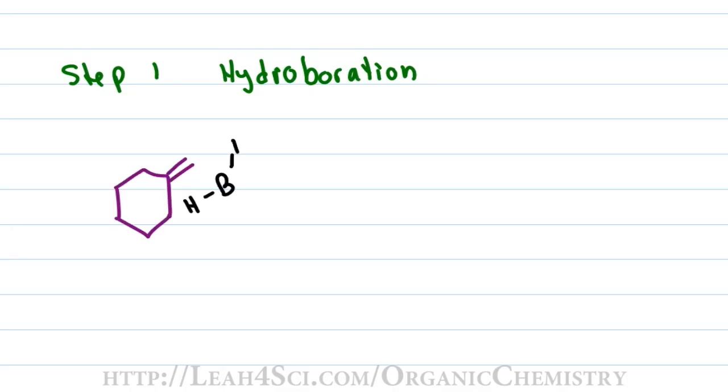This reaction has two steps. The first step in this mechanism is hydroboration. We'll take boron and line it up with the less substituted of the pi bound carbons and the hydrogen goes to the more substituted carbon. This allows the two other hydrogens to hang off at the end of the molecule.